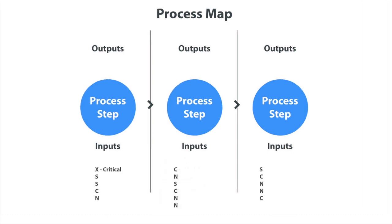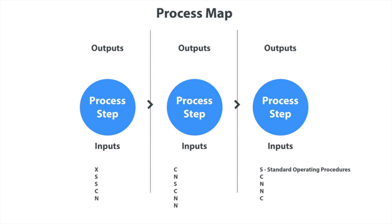Critical (X) means the inputs are statistically controllable. Controllable (C) is where the inputs have a direct relationship to the overall success of the output. Standard operating procedures (S) are inputs that represent the generally accepted practices of the process. And noise (N) refers to inputs that are difficult, expensive, or impossible to control.